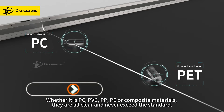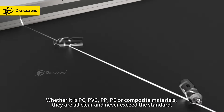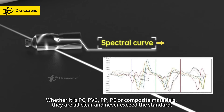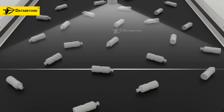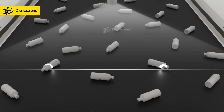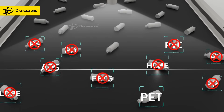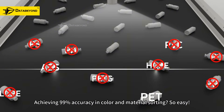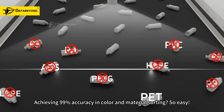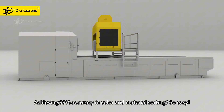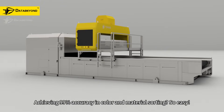Whether it is PC, PVC, PP, PE, or composite materials, they are all clear and never exceed the standard. Achieving 99% accuracy in color and material sorting. So easy.